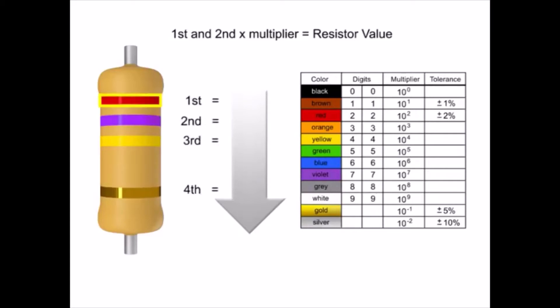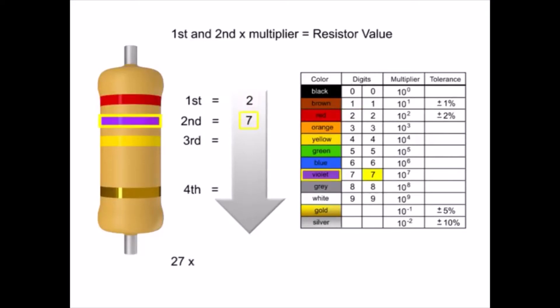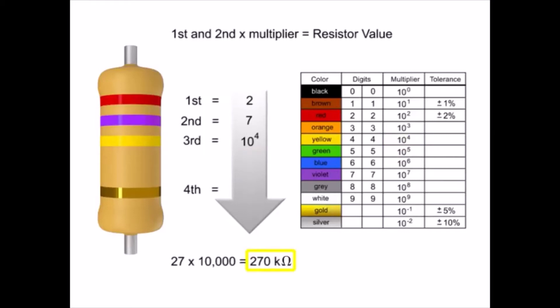The first band is red, so the first digit value is 2. The second band is violet, so digit 2 is 7. The third band is yellow, so we multiply the first two numbers by 10 to the fourth, or 10,000. Thus, the value of this resistor is 270 kilo-ohms with a tolerance of plus or minus 5%.